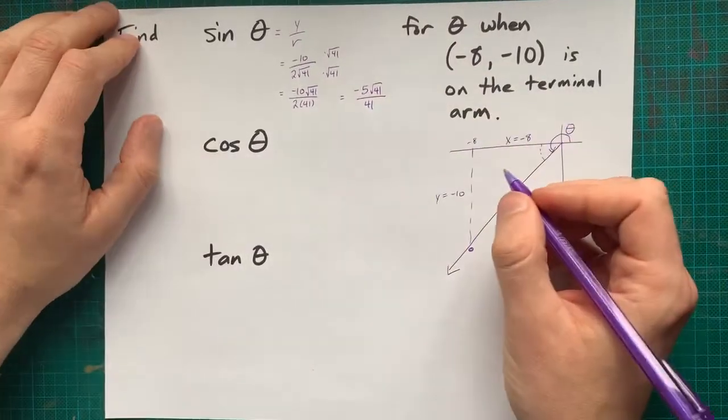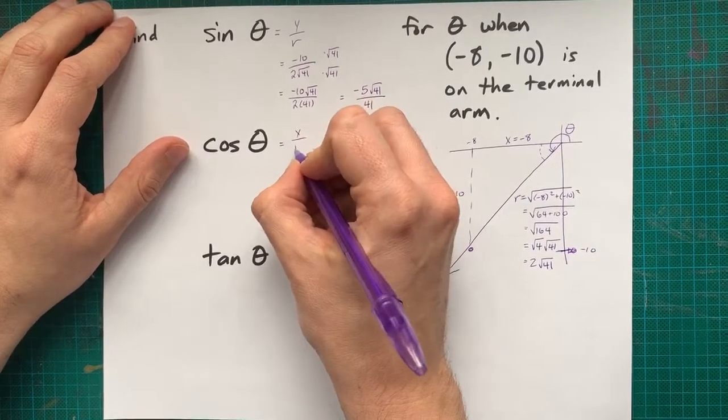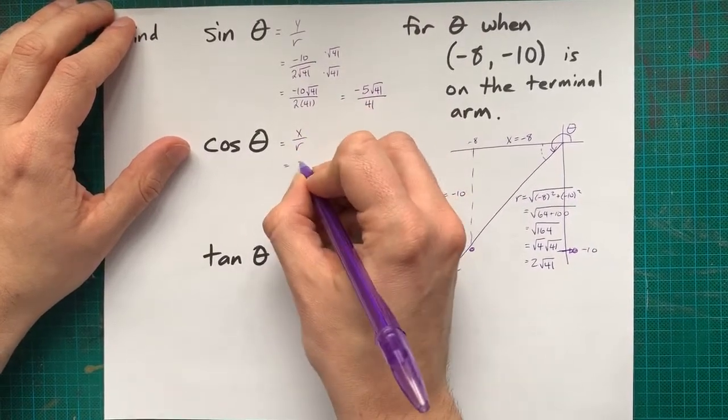Can't reduce anything more. Cos is x over r, so you're going to watch me do the whole thing over again.